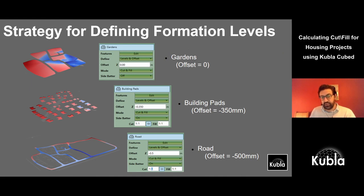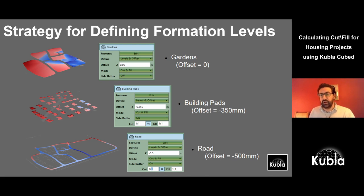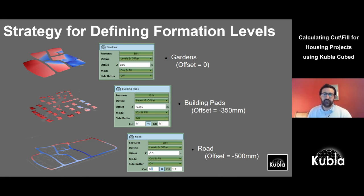When adjusting each element you use the Z offset in the program, which lets you move an element up or down in the Z-axis. You put a negative offset — for example, minus 350mm or minus 0.5m. I'll rename this phase to 'bulk earthworks' or 'subgrade' and go through the full project now.